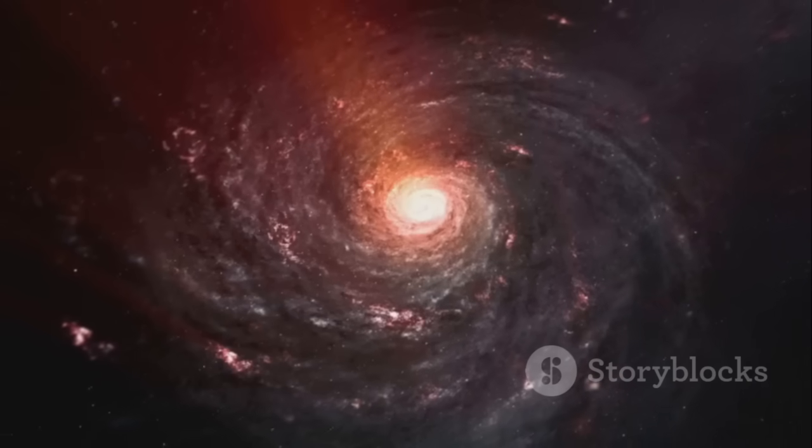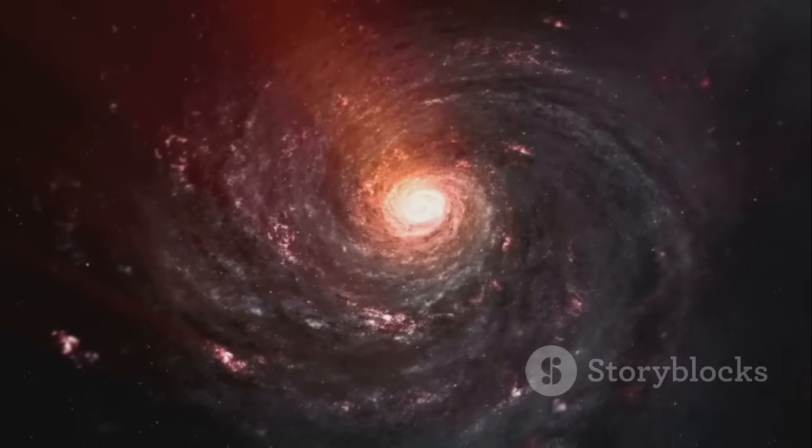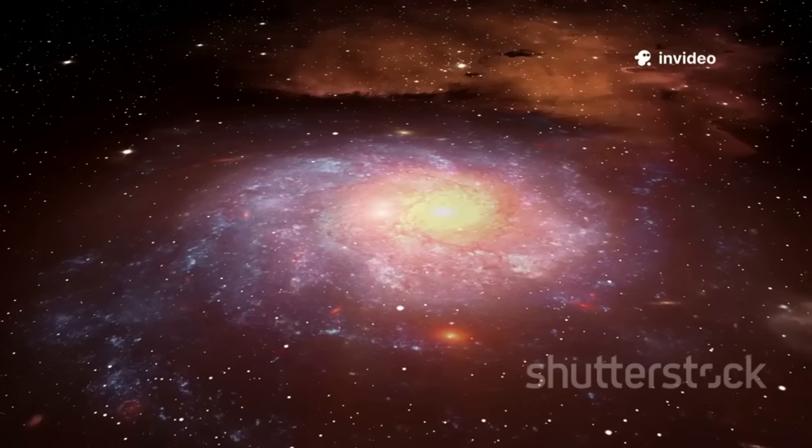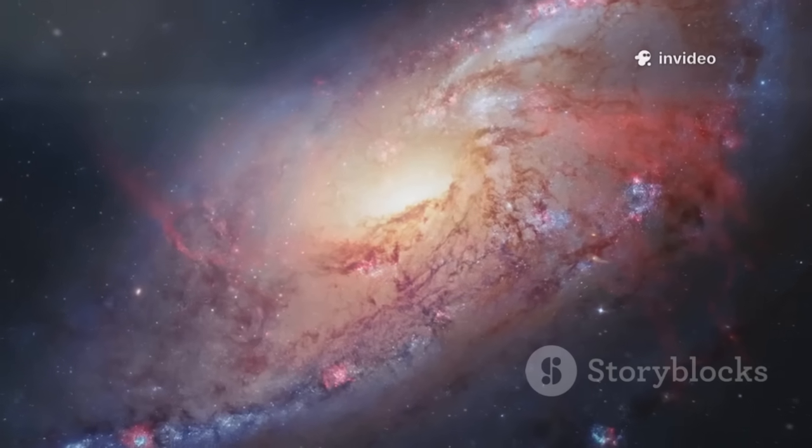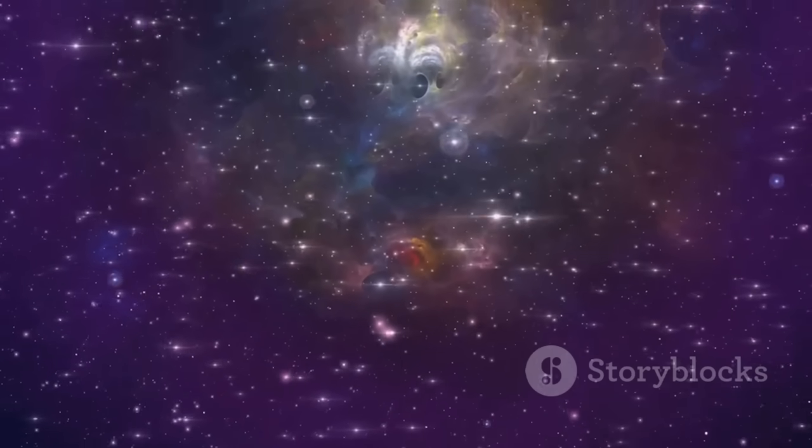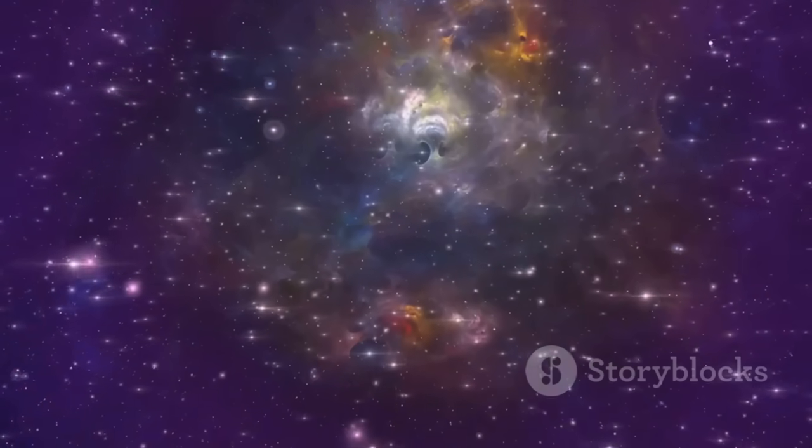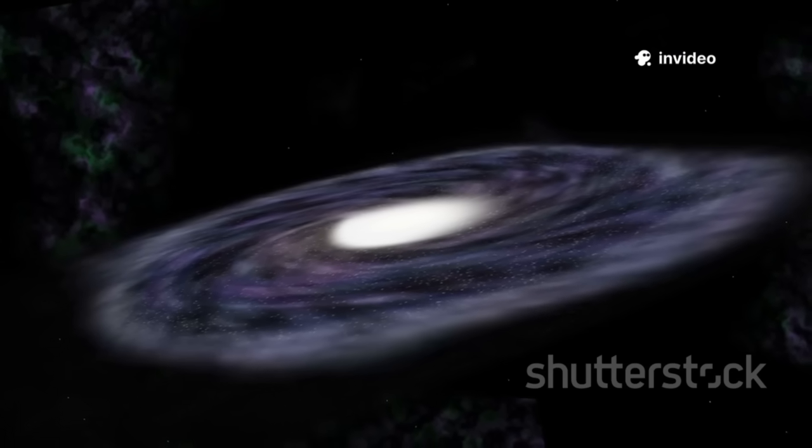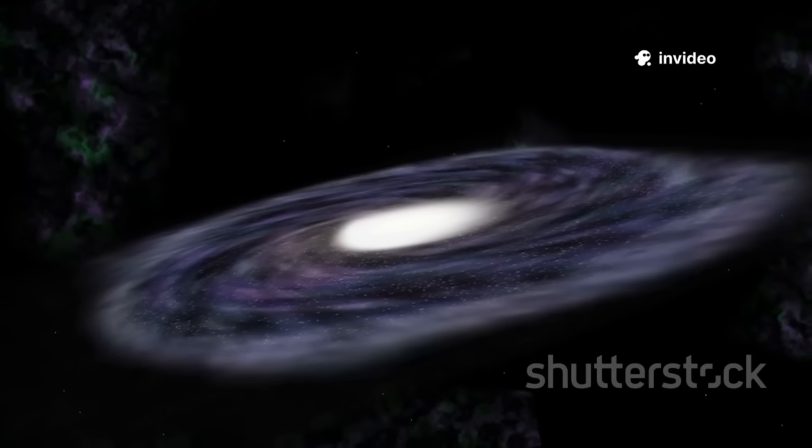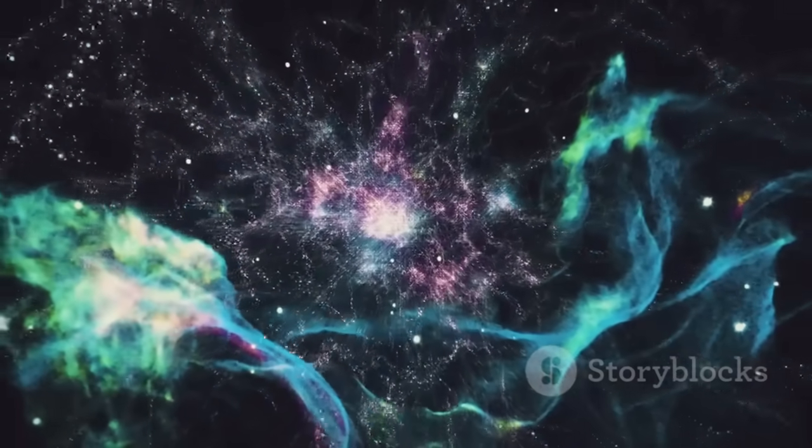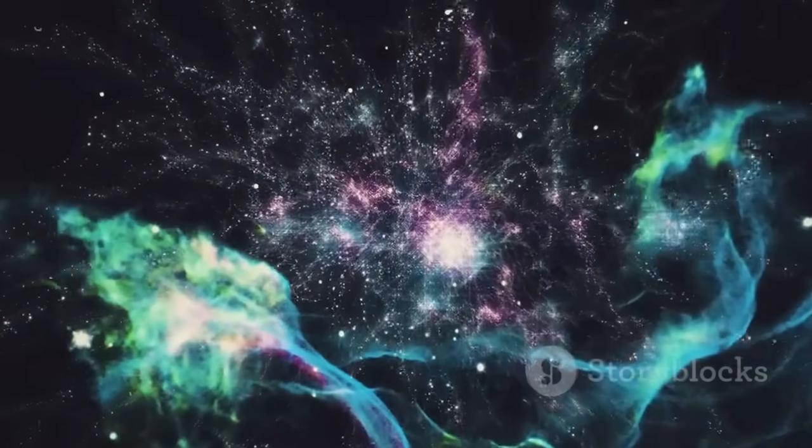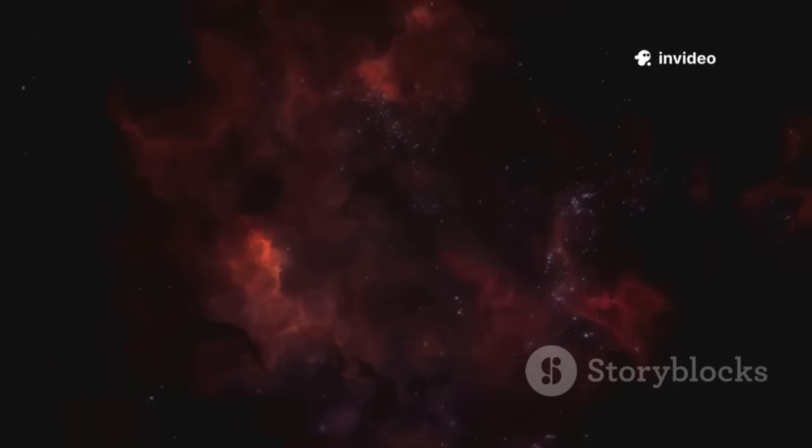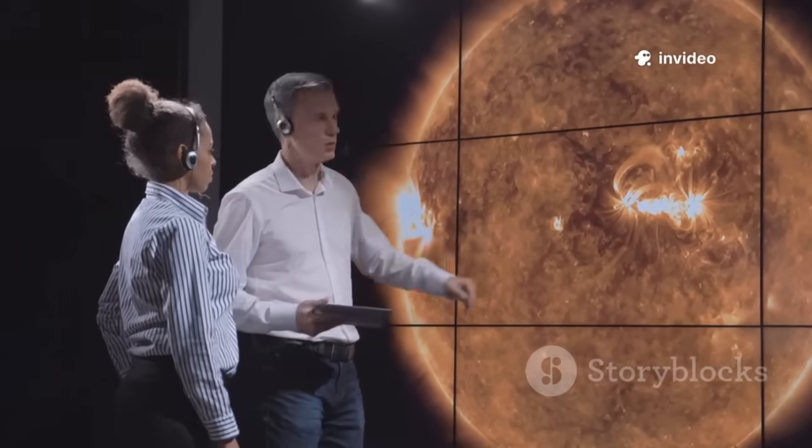Instead, they found giants: galaxies as massive as the Milky Way, but when the universe was less than 5% its current age. These galaxies were packed with stars, some even showing hints of disk-like structure. It was as if the universe skipped its childhood and jumped straight to adolescence. Even more shocking was their abundance, far more than the model predicted. The universe wasn't just building big galaxies early, it was mass-producing them. This single discovery threw our timeline of cosmic evolution into chaos. The rules we thought governed the early universe suddenly seemed incomplete. The little red dots demanded a new explanation, and cosmology was left scrambling for answers.